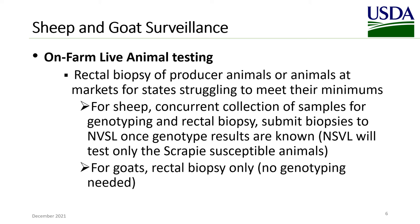Surveillance samples can also be collected from live animals. For on-farm live animal testing, one could collect rectal biopsies of producer animals or animals at markets. This is for states that are struggling to meet their minimums. For sheep, we recommend concurrent collection of samples for genotyping and rectal biopsy, and then the biopsies are submitted to NBSL once the genotype results are known. NBSL will only test the scrapie susceptible animals, but all animals that are genotyped will count towards a state's minimums. For goats, only rectal biopsies need to be collected — no genotyping is done for goats.